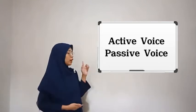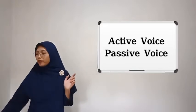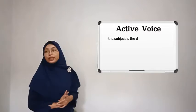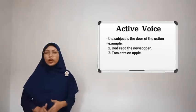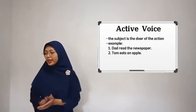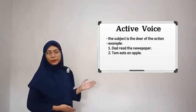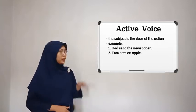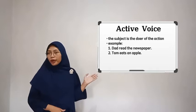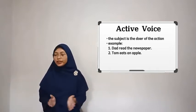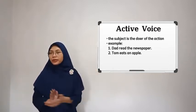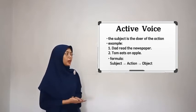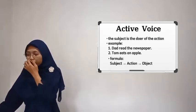Now we're going to talk about two types of voice. First, active voice. Active voice is used to indicate that the subject of the sentence is the doer of the action — the one who is performing the action. Let's read the examples: 'Dad read the newspaper' and 'Tom ate the apple.' In these two examples, Dad and Tom are the subjects emphasized as the doers of the actions. The formula for active voice is: Subject + Action + Object.